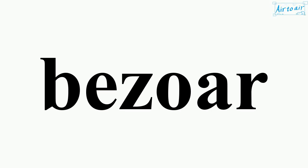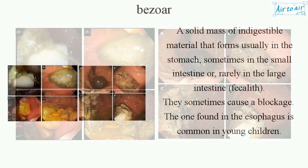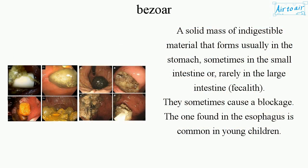Bezoar. A solid mass of indigestible material that forms usually in the stomach, sometimes in the small intestine or, rarely, in the large intestine (fecaleth). They sometimes cause a blockage. The one found in the esophagus is common in young children.